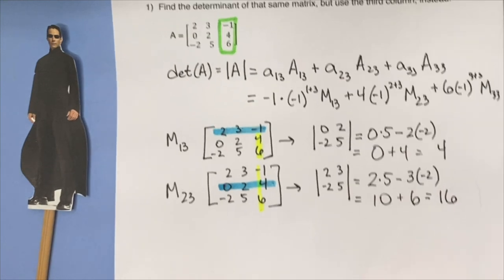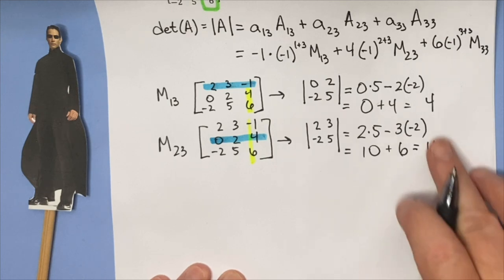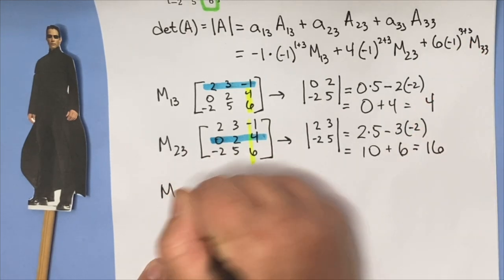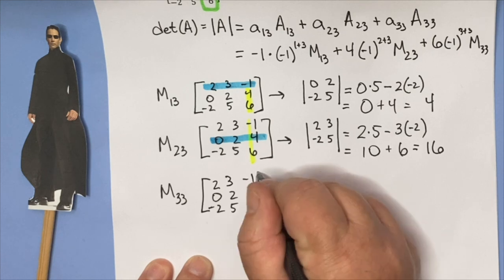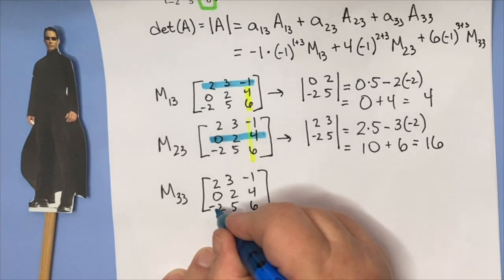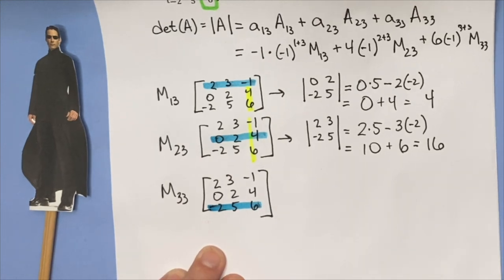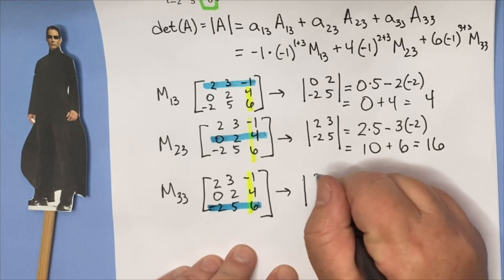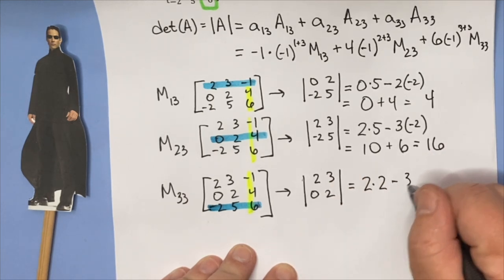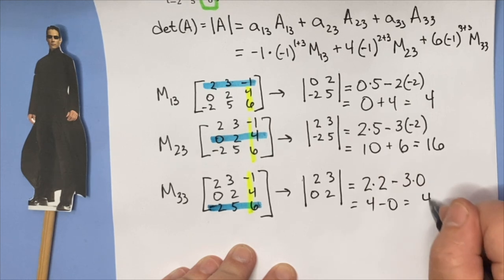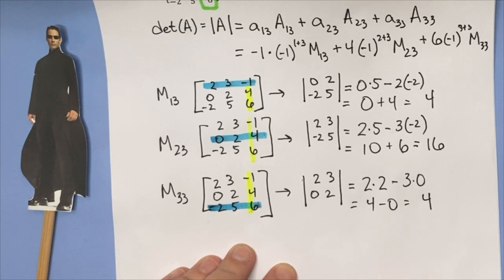I want the minor at (3,3). The matrix is 2, 3, negative 1; 0, 2, 4; negative 2, 5, 6. At position (3,3) I'm in the bottom row and third column, so I look at the determinant of 2, 3, 0, 2. There's a nice 0 in there, so I get 2 times 2 minus 3 times 0, which is just 4 minus 0 = 4. Zeros in a matrix really make the arithmetic a lot easier — keep that in mind.